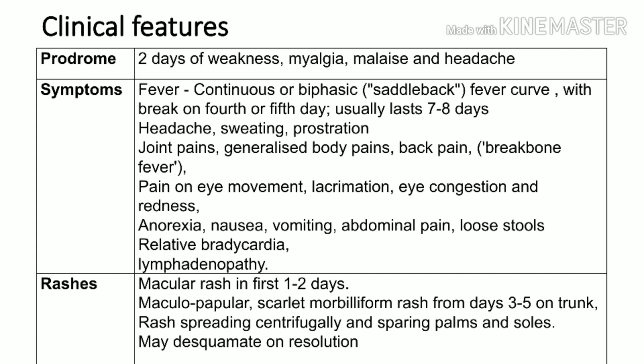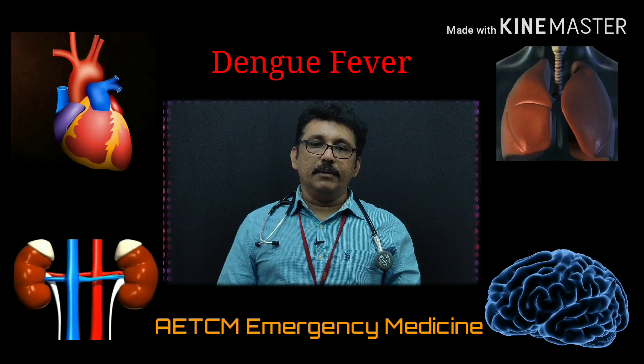Some patients can have relative bradycardia — normally with high-grade fever the heart rate increases, but in dengue fever and typhoid, that normal response is blunted. The heart rate may be slightly lower. Lymphadenopathy is also seen in some patients. Many patients with dengue fever will have rashes all over the body in the first 1 to 2 days, though it is not very common in all patients and may disappear after some time.